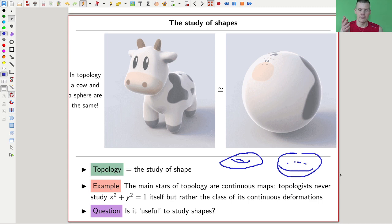Topology really is the study of shape. Topologists really never study an equation, they really study a circle as a shape. And the question that kind of started topological data analysis is how useful is it to study shapes. And with useful we obviously mean here, because we're talking about data analysis, in the study of data.